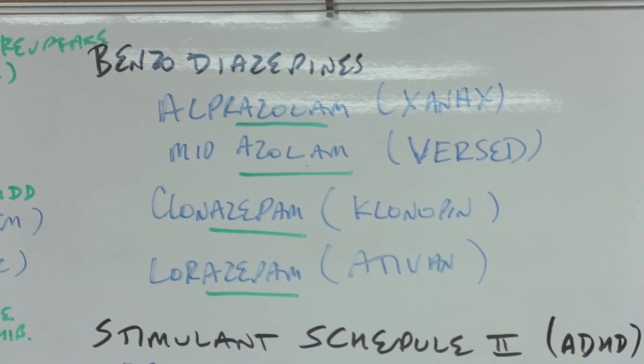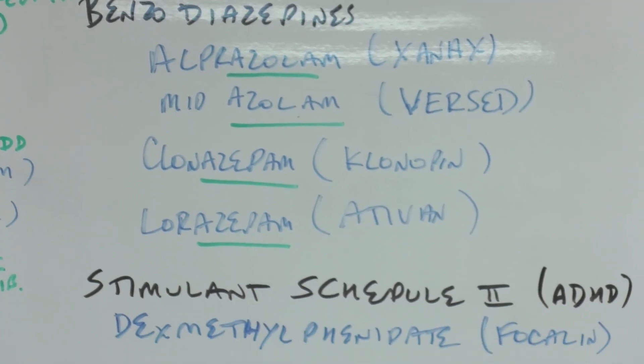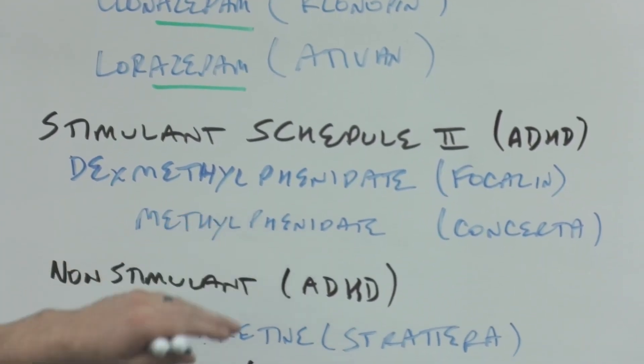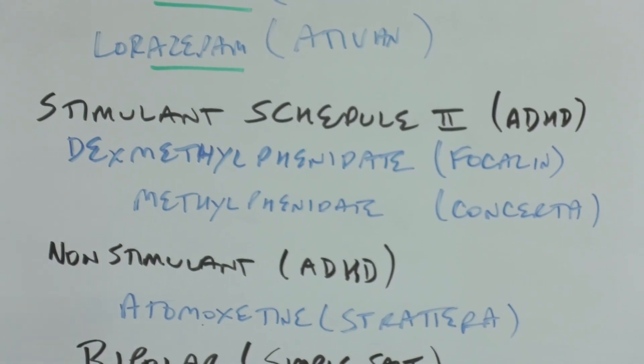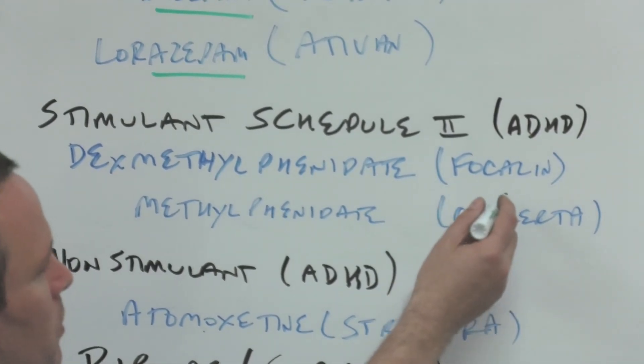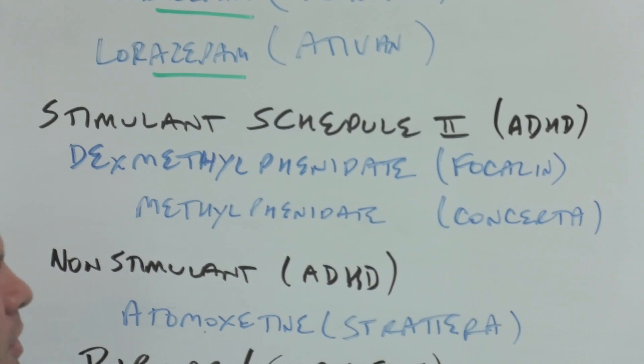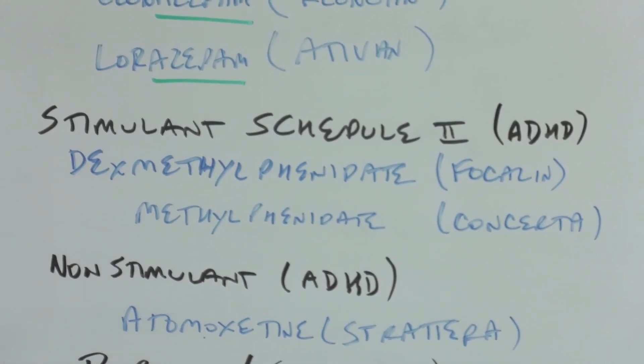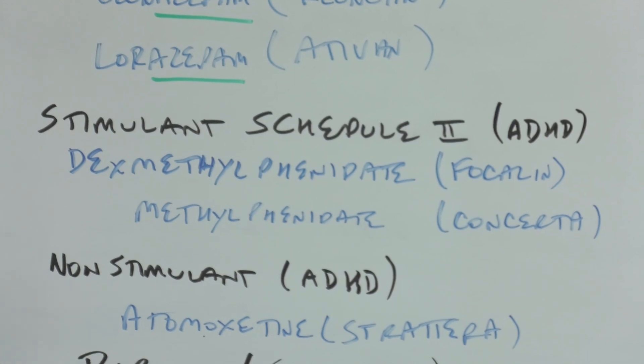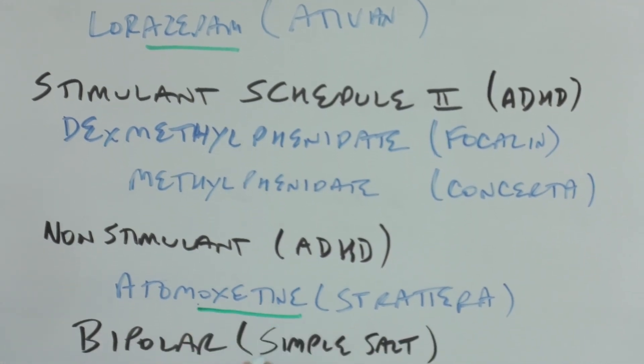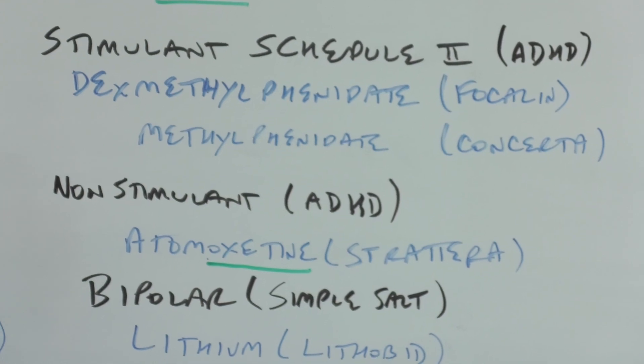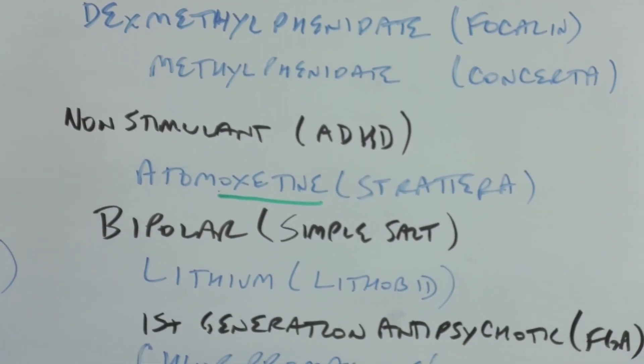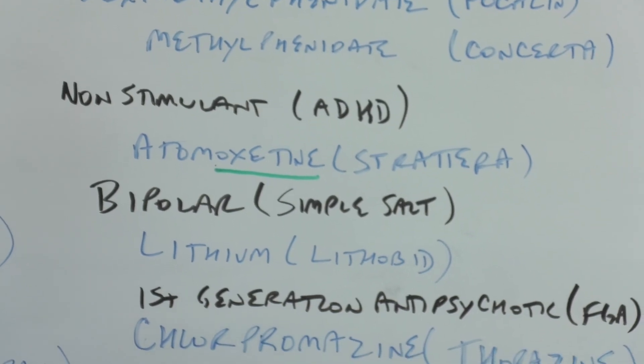Dexmethylphenidate and methylphenidate - I couldn't really find a stem for them, but you can see with the brand names what they're for. These are stimulant schedule twos for ADHD. They can help you focus - Focalin - or they can help you concentrate - Concerta. Non-stimulant ADHD medication: atomoxetine. Again we see this oxetine stem, but this does not mean it's an SSRI. You have to memorize it's a non-stimulant ADHD medication. Strattera can straighten out your attention.